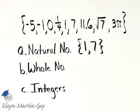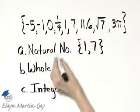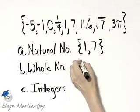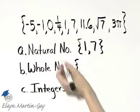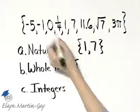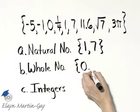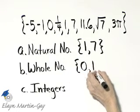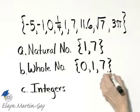Let's move on to whole numbers. The only difference between these two sets of numbers is that the whole number contains the number zero, which is in this set. So whole numbers in this set would be zero, one, and seven.